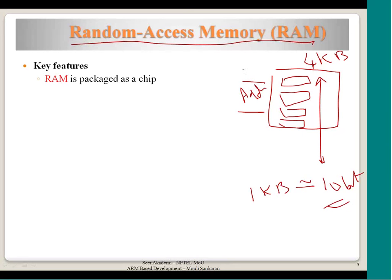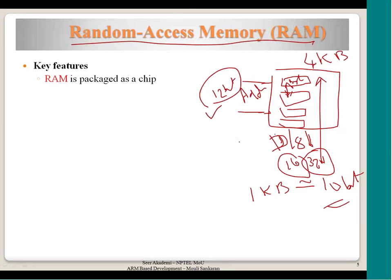One kilobyte corresponds to 10 bits of address line. For 4 KB, you add 2 more bits, so 12 bits of address line are required. The data bus could be 8-bit, 16-bit, or 32-bit wide. Based on the width of the memory's data bus, it will access 1 byte, 2 bytes, or 4 bytes at a time. Address width decides the size of the memory, and data bus width decides how much data is fetched in one access.